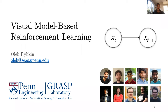In his time at Penn, he's already made several contributions to the intersection of computer vision, robotics, and deep learning. He has a knack for drumming up productive collaborations outside of GRASP, and has spent time at the French National Institute for Research in Computer Science and Automation, the Tokyo Institute of Technology, and UC Berkeley. Today he's going to be telling us about his recent work entitled Scalable Visual Model-Based Reinforcement Learning. So without further ado, I'll hand it over to Oleg.